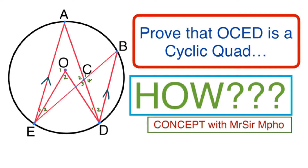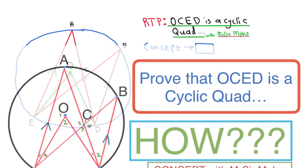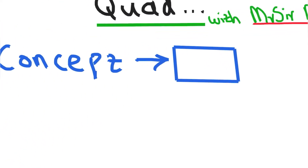I'm going to use this as an example for you to understand the concept behind proving if something is a cyclic quad. I want to first explain the concept behind these types of questions, so that if the question comes in any form, you'll be able to attack it.